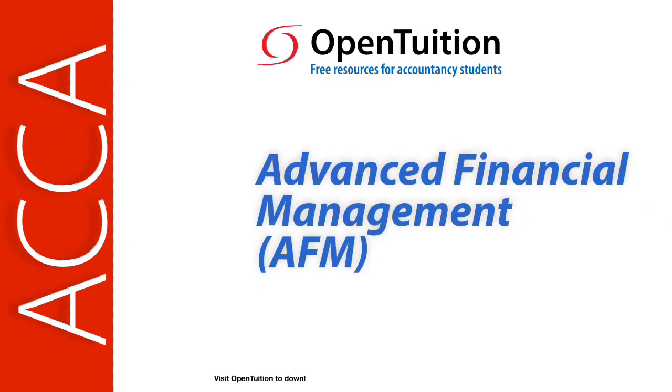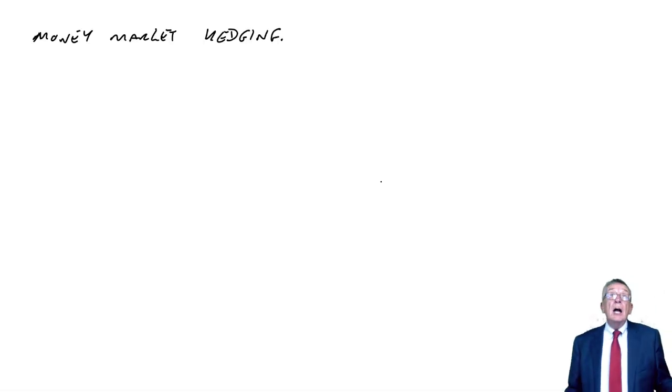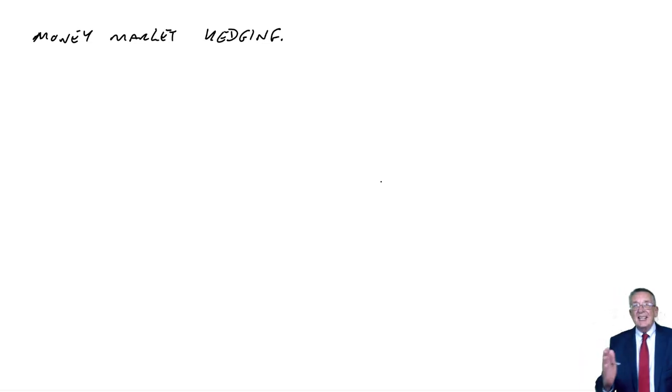This is a lecture from Open Tuition. To benefit from the lecture, you should download the free lecture notes from OpenTuition.com. Remember, we're looking at foreign exchange risk management and working through all the technical ways in which you can minimize the risk. We dealt with forward contracts, which is straightforward enough. The next way we can look at is something called Money Market Hedging, which does need a little more thought, even though you shouldn't find it too difficult.